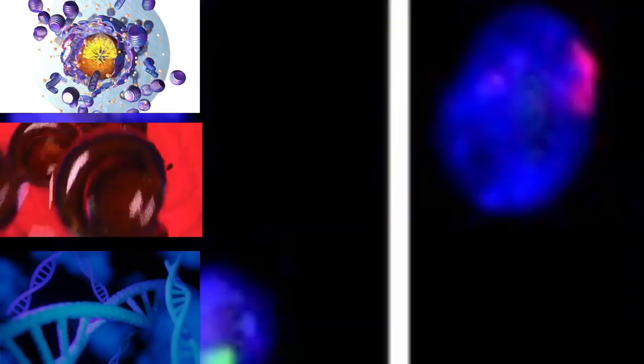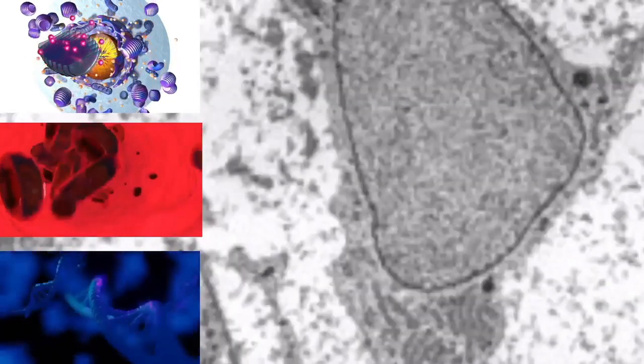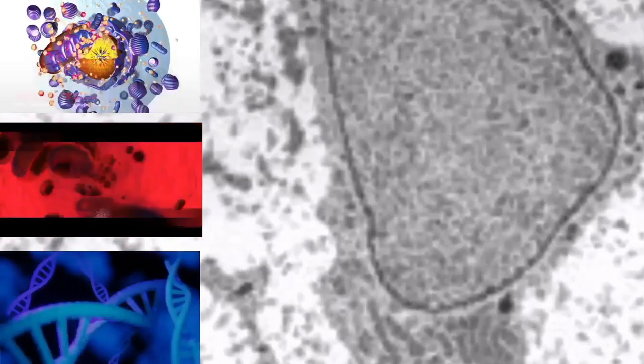In non-disjunction, sister chromatids fail to separate during anaphase. One daughter cell receives both sister chromatids from the non-disjoining chromosome, and the other cell receives none. As a result, the former cell gets three copies of the chromosome, a condition known as trisomy, and the latter will have only one copy, a condition known as monosomy. On occasion, when cells experience non-disjunction, they fail to complete cytokinesis, and retain both nuclei in one cell, resulting in binucleate cells.